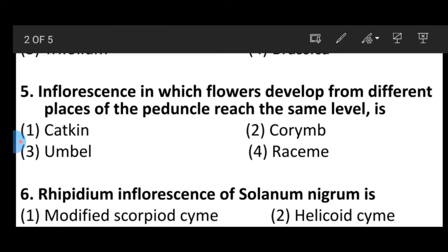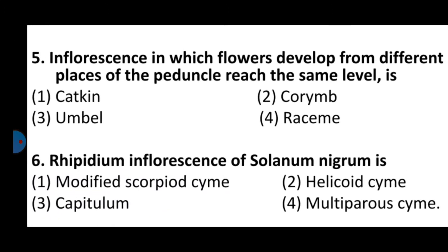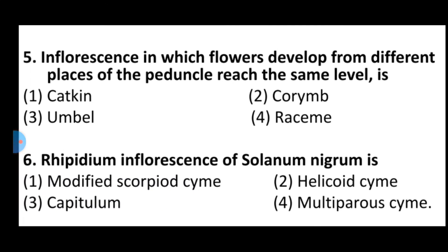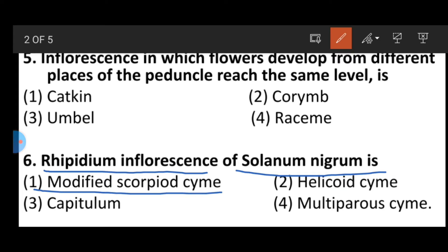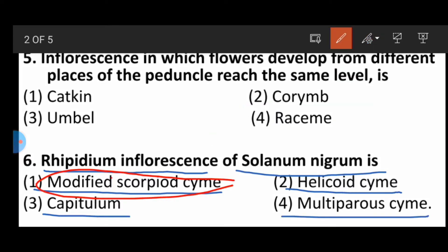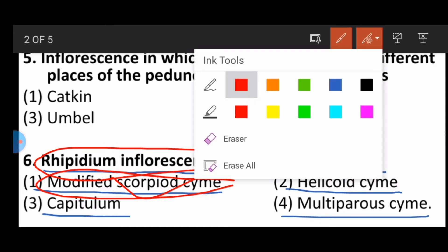Question number six: The cyathium inflorescence of Solanum nigrum is — option one: modified scorpioid cyme, option two: helicoid cyme, option three: capitulum, option four: multiparous cyme. The correct answer is modified scorpioid cyme, which is found in the cyathium inflorescence.